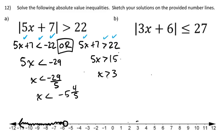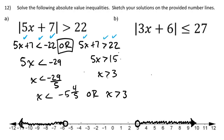On the number line, there's an open circle at negative 5 and 4/5 with shading to the left, and an open circle at 3 with shading to the right. The solution is: x is less than negative 5 and 4/5, or x is greater than 3. Points between these values, including the endpoints, do not satisfy the inequality.